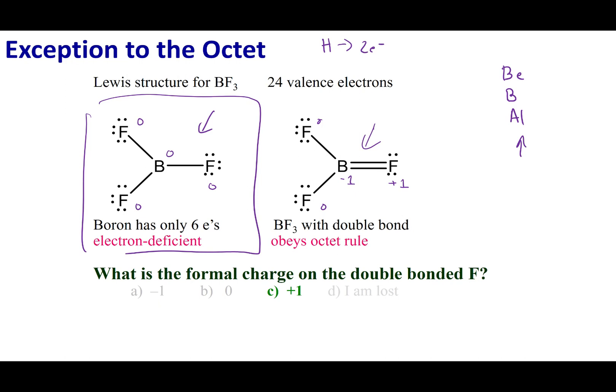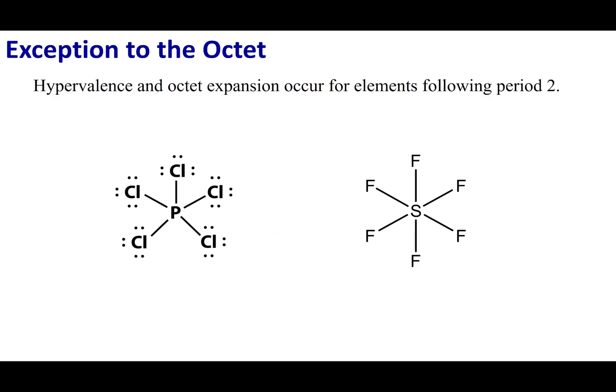If we go electron deficient, one thing you might ask is: can we go the other way? Can we get more than eight electrons around a single atom? This is going to be the case for elements that are past period two. Elements in row three, row four, and so forth can go hypervalent, meaning they can have more than eight electrons around the central atom.